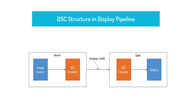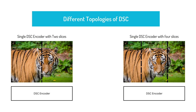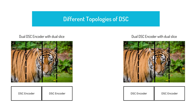A display system can support multiple DSC encoders. Each encoder can have a single or dual slice configuration based on its requirement. Handshaking between encoder and decoder is achieved using PPS values — the Picture Parameter Set. PPS includes all the data like slice width, slice height, number of slices, and other parameters.